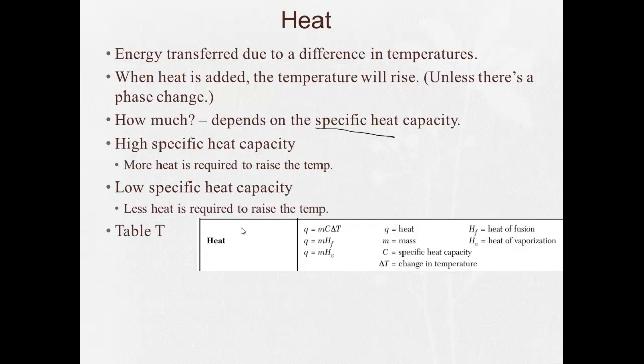And from table T on your reference table, we have this handy dandy formula here. Q equals mc∆T, where Q is heat, which is in joules or kilojoules. M is the mass of the substance that we're investigating. C is the specific heat, or the specific heat capacity, and that's a number that you'll be given. Delta T, remember delta means change. So delta T is a change in temperature.